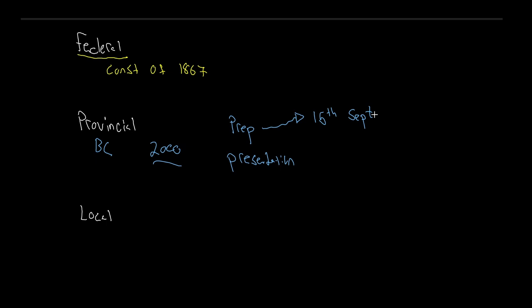So the preparation side has three aspects: fiscal forecast, summary of key issues, and information on how the public can get involved. The 15th of September is when that needs to be provided. The process then goes through actually creating the budget — compiling the public feedback, figuring out the key issues and how to address them. Once that's figured out, the budget must be presented — brought up in the legislature for debate — and this must happen by the third Tuesday in February.